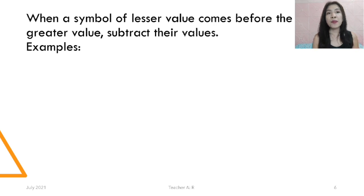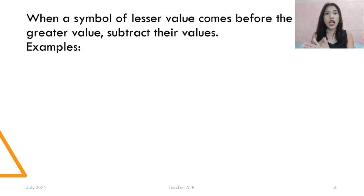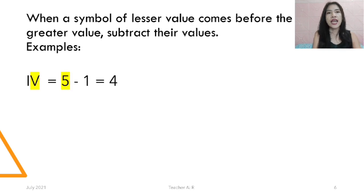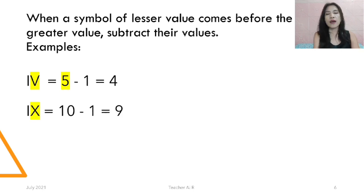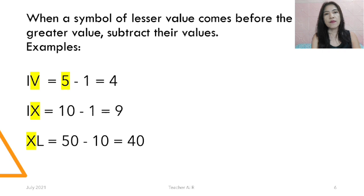We have to remember: when the symbol of lesser value comes before the greater value, we subtract. For example, IV — I is 1 and V is 5, so 5 minus 1 equals 4. We also have IX: X is 10 and I is 1, so 10 minus 1 equals 9. We also have XL: X is 10 and L is 50, so 50 minus 10 equals 40.